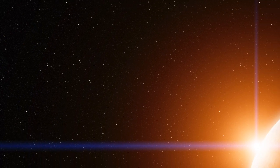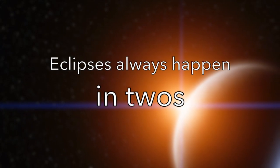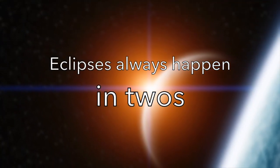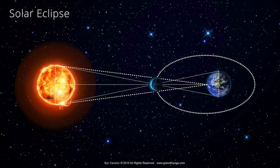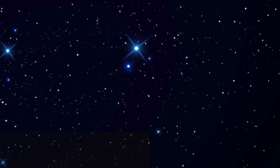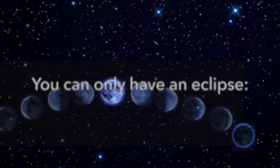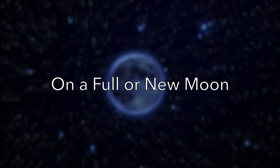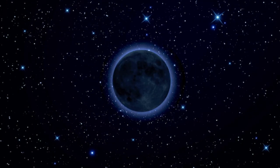I've been getting a lot of questions from students and clients about the solar eclipse. One of the little-known facts around solar eclipses, or eclipses in general, is they always happen in twos. You can't have a solar eclipse without a lunar eclipse. There are two things that have to be in play in order for us to experience an eclipse, and they're related to the moon cycle and the phases of the moon. You can only have an eclipse on a full moon or a new moon, but every full moon we don't have an eclipse, and every new moon we don't have an eclipse.